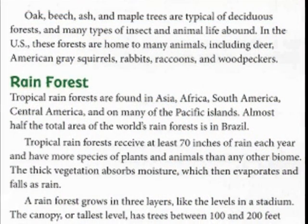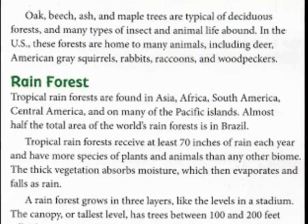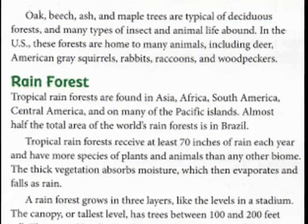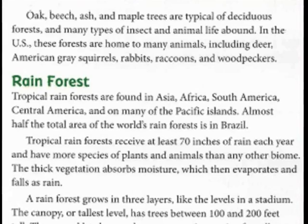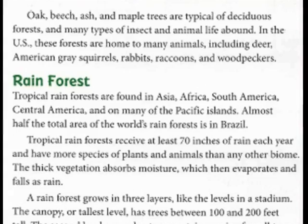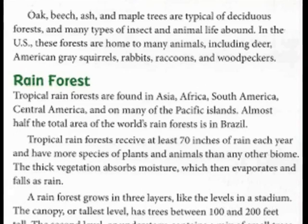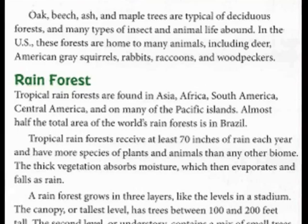Oak, beech, ash, and maple trees are typical of deciduous forests, and many types of insect and animal life abound. In the U.S., these forests are home to many animals including deer, American gray squirrels, rabbits, raccoons, and woodpeckers.